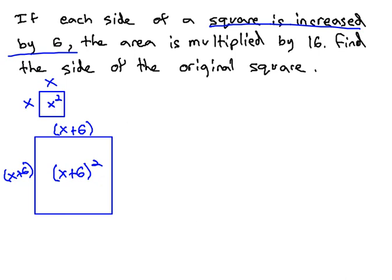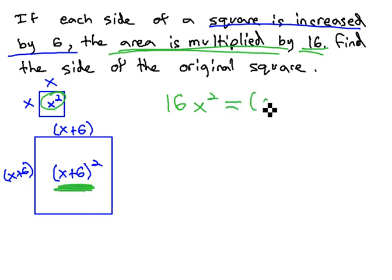We are told how these areas compare with each other. When it got bigger, the area was multiplied by 16. In other words, if we took the smaller area, the x squared, and multiplied it by 16, that would equal or give us the bigger area, (x+6) squared.